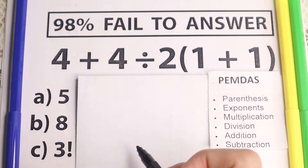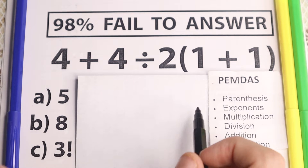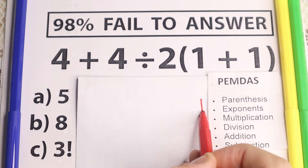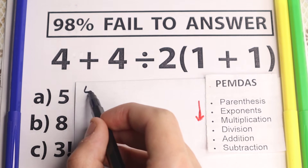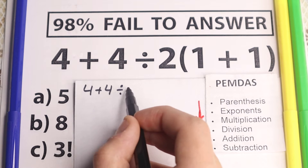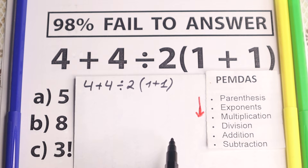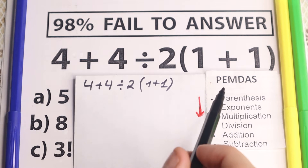Let's look at the PEMDAS order of operations. This is the main popular order of operations in the world — all internet libraries, scientific and graphing calculators work according to PEMDAS nowadays. PEMDAS works from the top to the bottom; this is our first step. Let's rewrite this problem: 4 plus 4 divided by 2, and in parentheses 1 plus 1. According to PEMDAS, what is our first step? Our first step is parentheses.